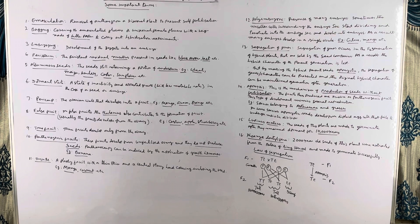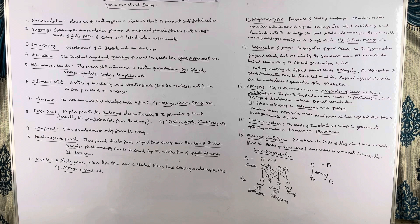False fruit: sometimes, instead of the ovarian wall, the thalamus contributes to the formation of the fruit. Such fruits are known as false fruits. Examples include cashew, apple, strawberry, etc.